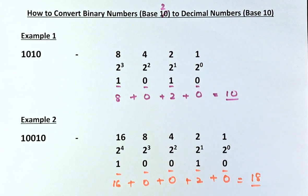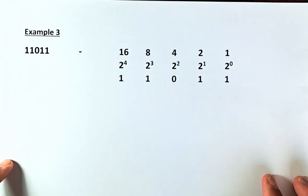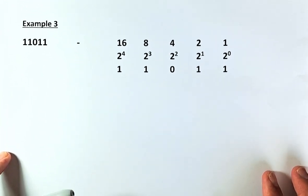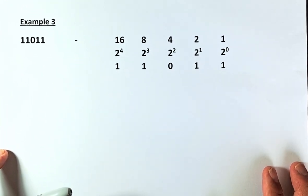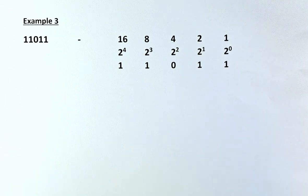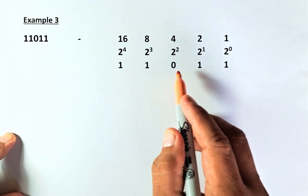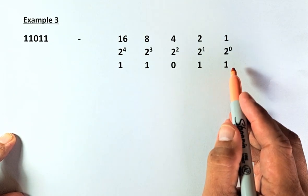Hope you got it right. Okay, now we are going to do the last example. If you want to have a go, pause the video and have a go at it. So we are going to put 1, 1, 0, 1, 1.